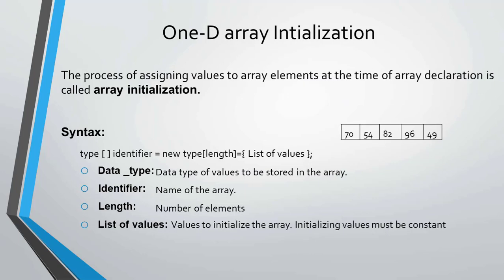One-dimensional array initialization: The process of assigning values to array elements at the time of array declaration is called array initialization. On the screen you can see the one-dimensional array initialization syntax, which uses: data type, identifier, length, and a list of values.